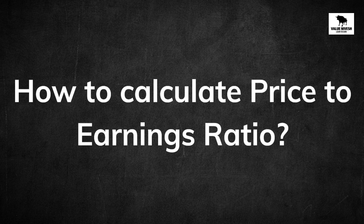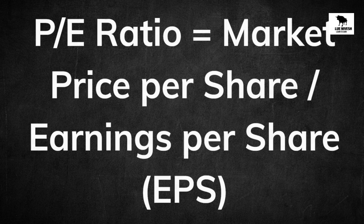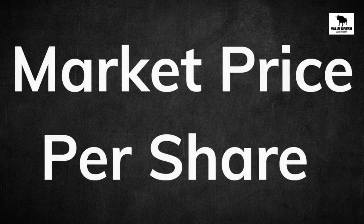Now let's look into how to calculate the price-to-earnings ratio with a simple example. The formula is market price per share divided by earnings per share. The market price per share is the current price at which the stock is trading, which can be easily found on a financial news website or a stock market app.